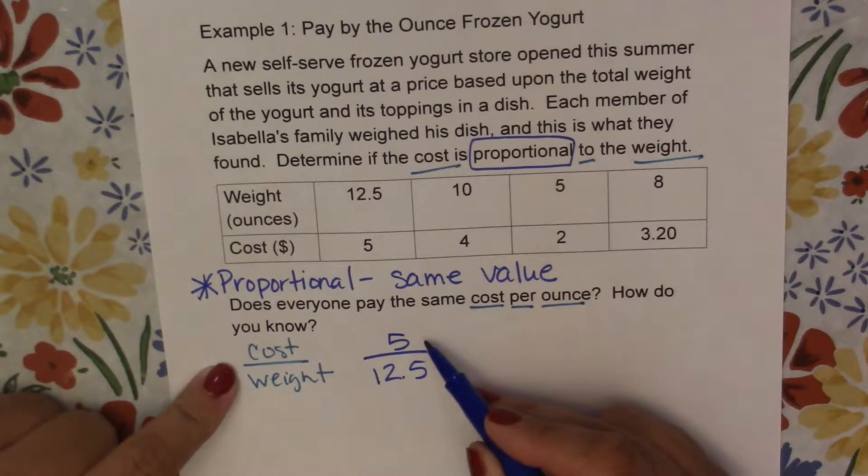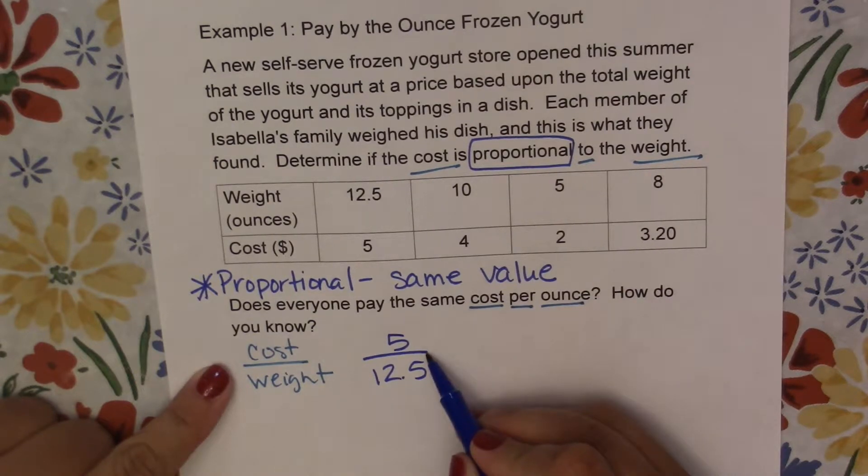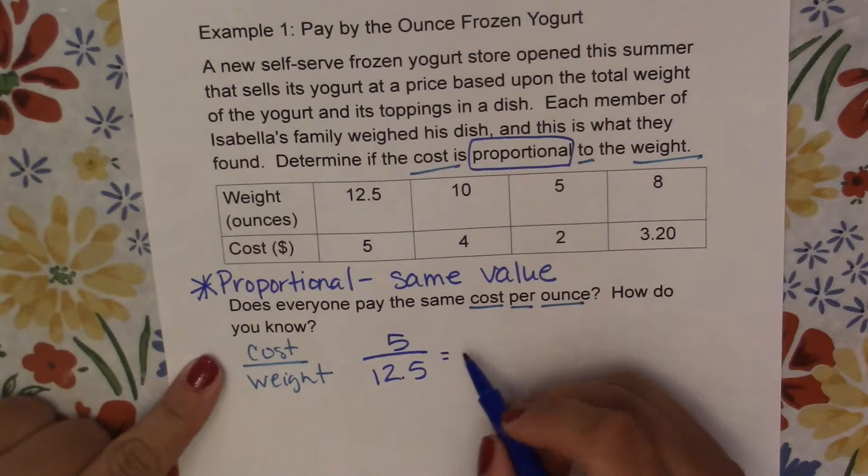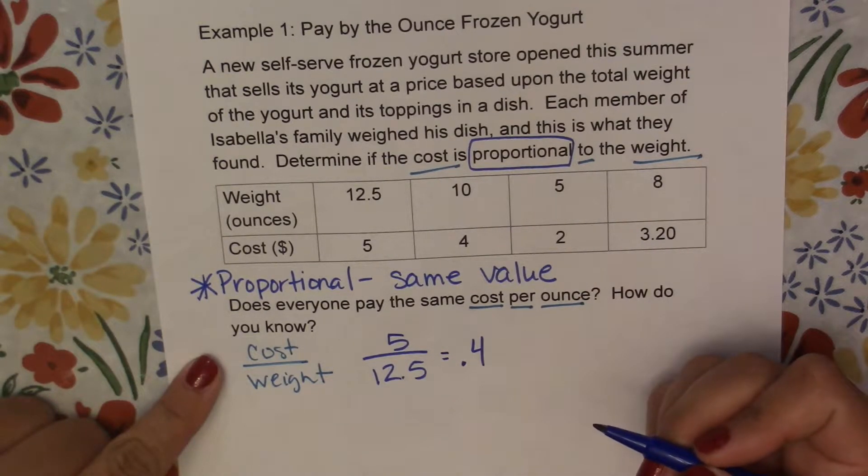So if we take 5 divided by 12.5, and you can use your calculator for this, you get 0.4 or 40 cents per ounce.